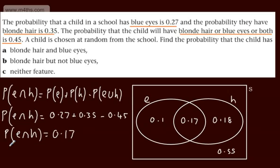Blonde hair but not blue eyes—if we wanted to write this, this would be E dashed intersection H. And that's going to be, if we look over here, the blonde hair but not blue eyes, and that's going to be 0.18.